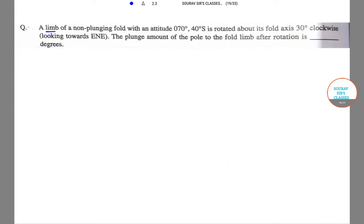Let us first read the question. A limb of non-plunging fold with an altitude of 070 degrees. So let me draw this first. It will look something like this. I will draw a circle first. Given the question, I guess I will be requiring three circles, so I will just draw the three circles but only mark the first one.